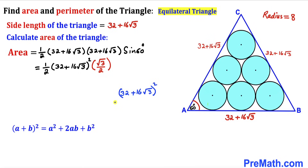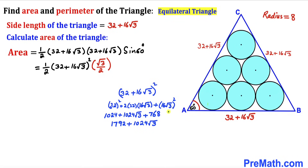Applying the identity: (32 + 16√3)² = 32² + 2 × 32 × 16√3 + (16√3)². Simplifying each term gives us 1024 + 1024√3 + 768 = 1792 + 1024√3.